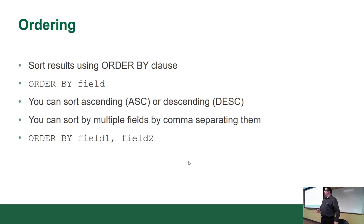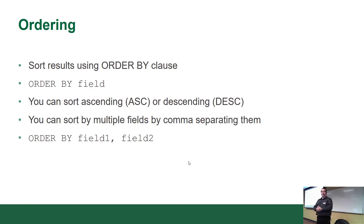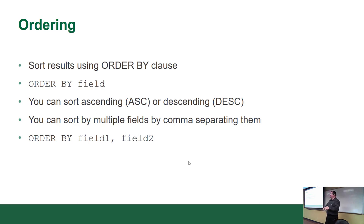The next one is the ORDER BY clause, which comes at the end of the query. You can go ORDER BY field and force ascending or descending order. Ascending means alphabetically 0 to 9, A to Z — following the ASCII table ordering. You can sort by multiple fields by comma-delimiting them.